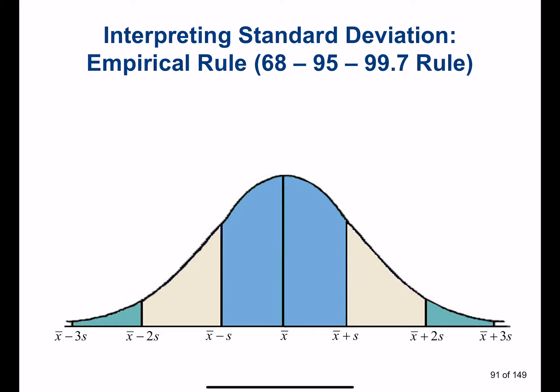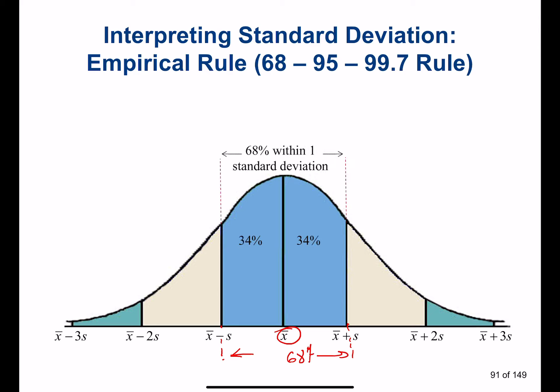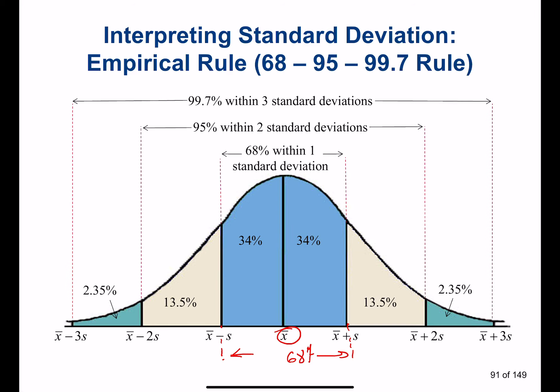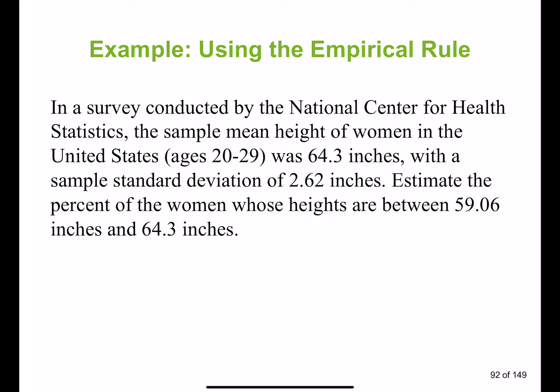To summarize the empirical rule: x-bar plus or minus one standard deviation covers 68 percent of all data; x-bar plus or minus two standard deviations covers 95 percent of data; and x-bar plus or minus three standard deviations covers 99.7 percent of data. Let's apply this to an example.